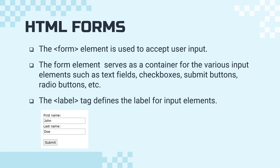A form element is used to accept inputs, just like the Facebook image I showed you — you're taking a first name, surname, and so on. Form elements serve as a container for various input elements such as text fields, checkboxes, submit buttons, radio buttons, and more. The label tag defines the label for form inputs. For example, 'First Name' is a label for the input field beneath it, which accepts the person's first name, and the second label is for the last name field.